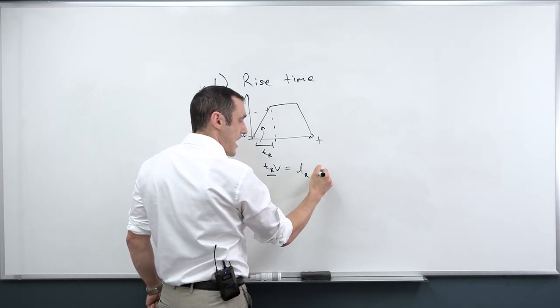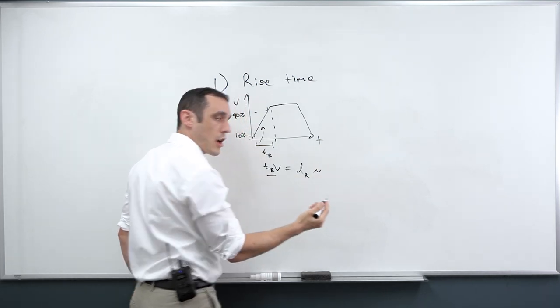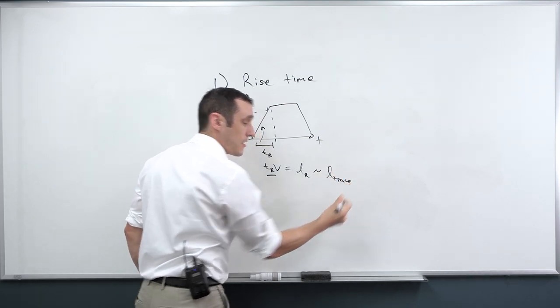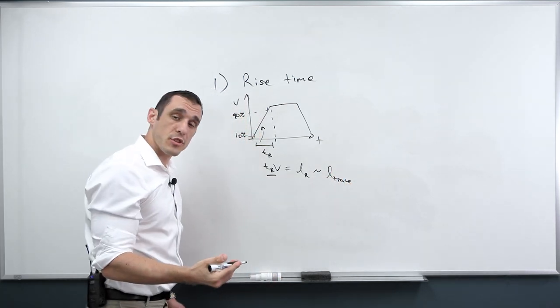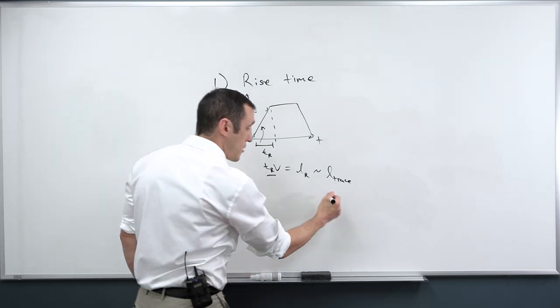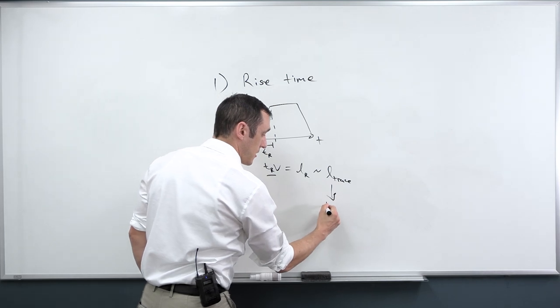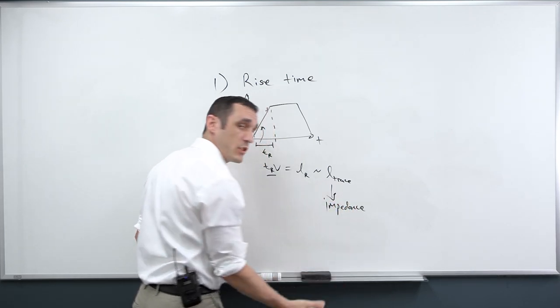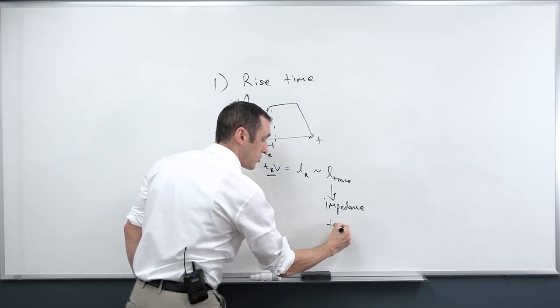If I take the signal rise time and then I multiply it by the velocity of the signal, then I get a length. So we'll just call it the rise length, meaning it's the length that the signal will travel during this period while it's actually rising up to this level shown on the graph. So this is a length. And so when this length is comparable, so on the order of the length of my trace, then my trace is prone to exhibiting the behavior that you would see on a transmission line.